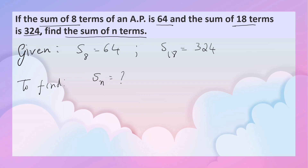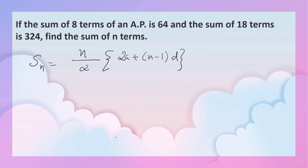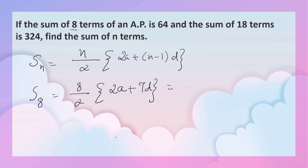Let us convert these to equation form. We know that the sum of n terms of an AP is equal to n by 2 into 2A plus n minus 1 into D. Now let us convert S8: S8 is equal to 8 by 2 into 2A plus 8 minus 1 into D, which is given as 64.